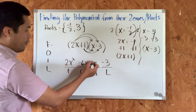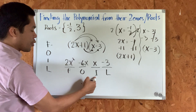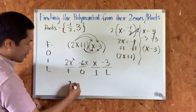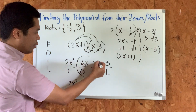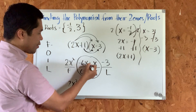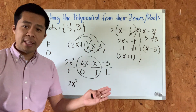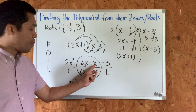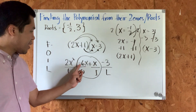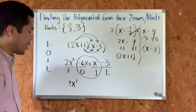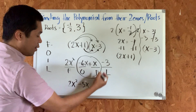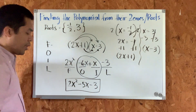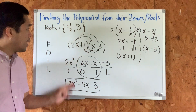Now we simplify. The outer terms and inner terms are like terms, so we can combine them. We have two x squared; then negative six x plus x — since one is negative and one is positive, we subtract: negative six plus one gives us negative five x; then we copy negative three. So our answer is two x squared minus five x minus three. This is the polynomial that has these two roots.